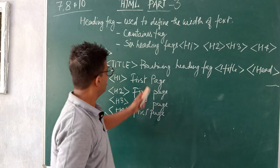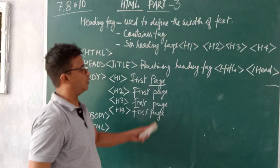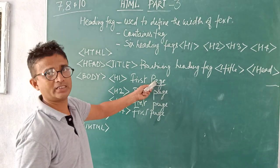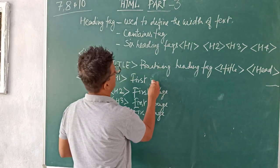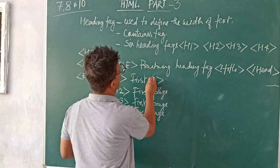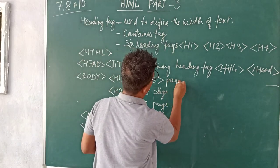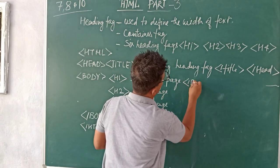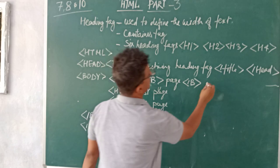Already I have, I want to make this page bold. Suppose you want to make this that it should appear bold. What you will do? You will put here after H1 you will put here bold tag, that is B. Then you will write first page. And then you close the B because it is a container tag.